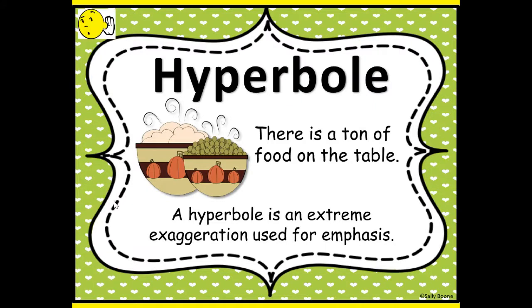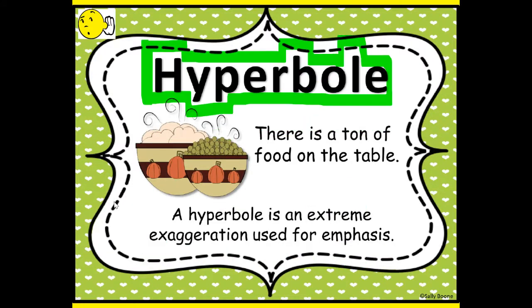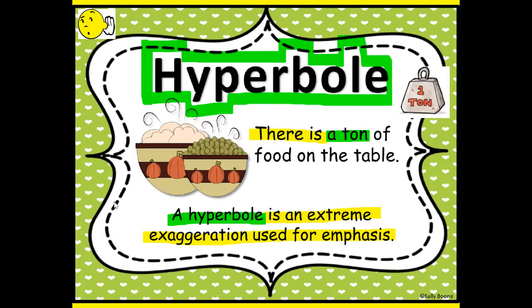Another type of figurative language is hyperbole. A hyperbole is an extreme exaggeration used for emphasis. For example: 'There is a ton of food on the table.' Is there actually a ton of food on the table? No — this is an exaggeration. That's hyperbole.